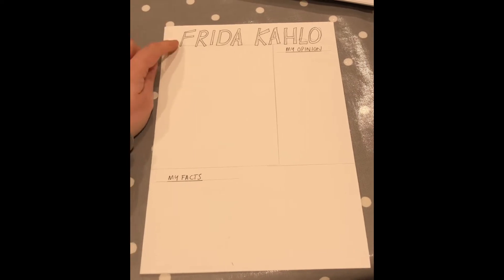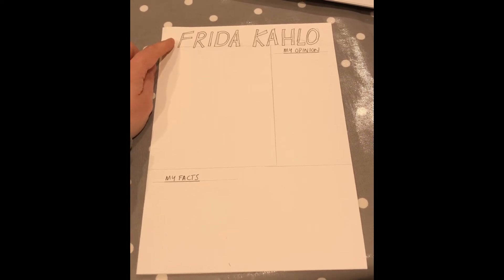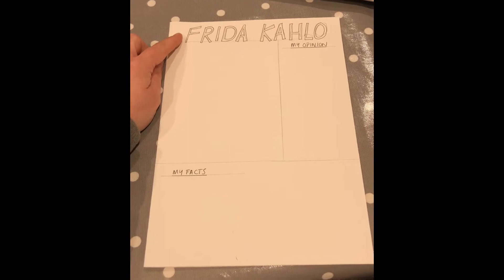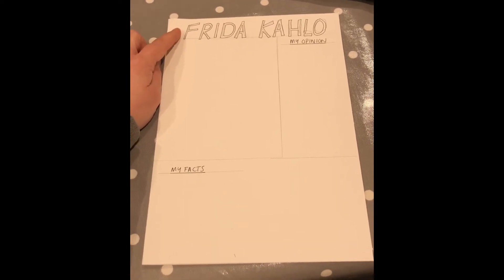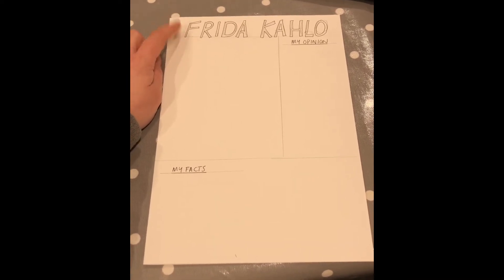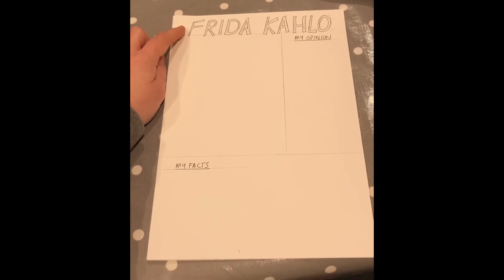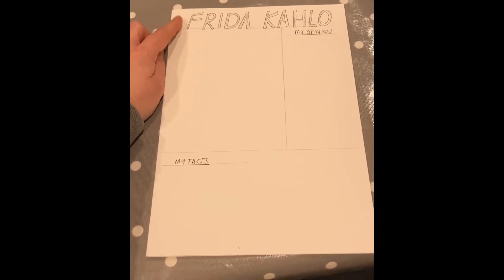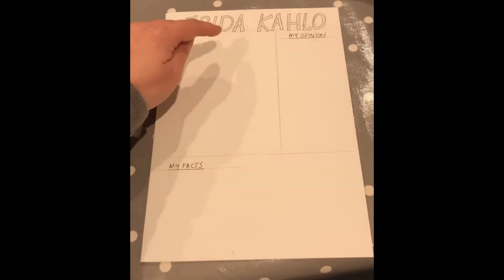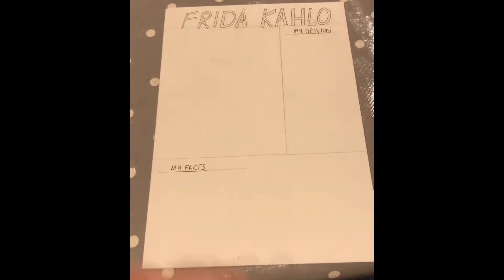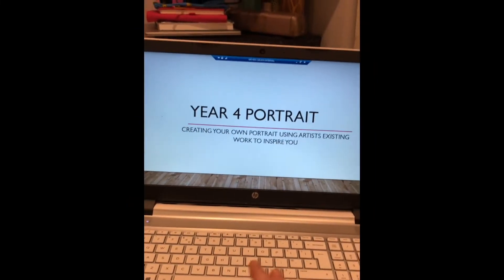I have chosen Frida Kahlo because I found out some good information about her today — I think she's very interesting. So I've added in a title of Frida Kahlo. Make sure you spell this correctly, otherwise it's a bit awkward with the artist name not being correct. I've then got my opinion box and my facts box, and I'm now going to talk you through this lesson.